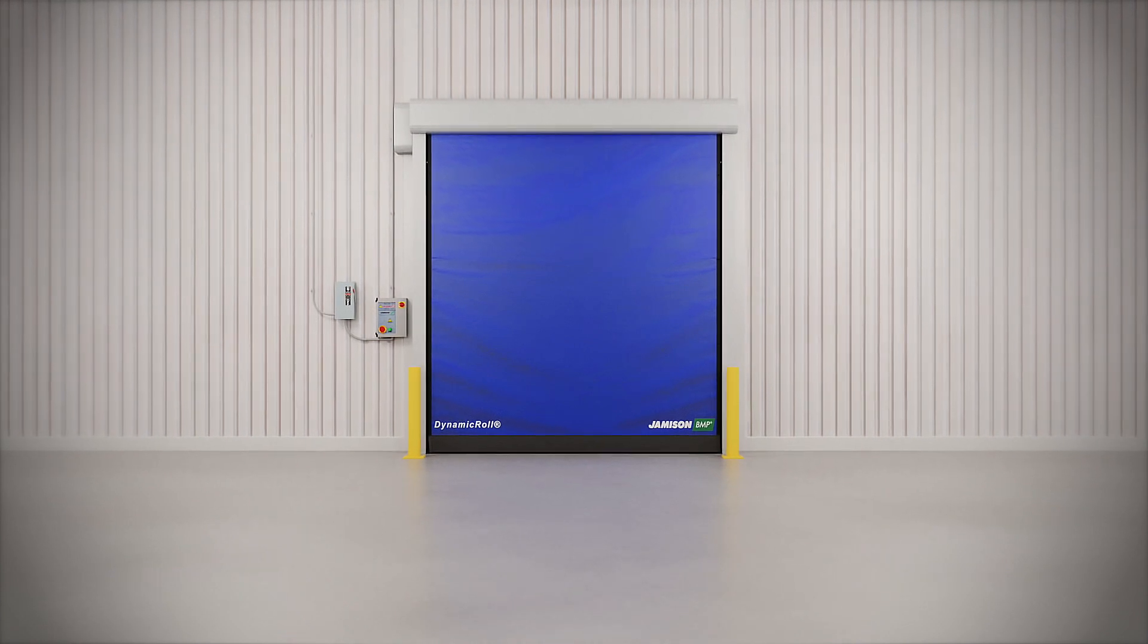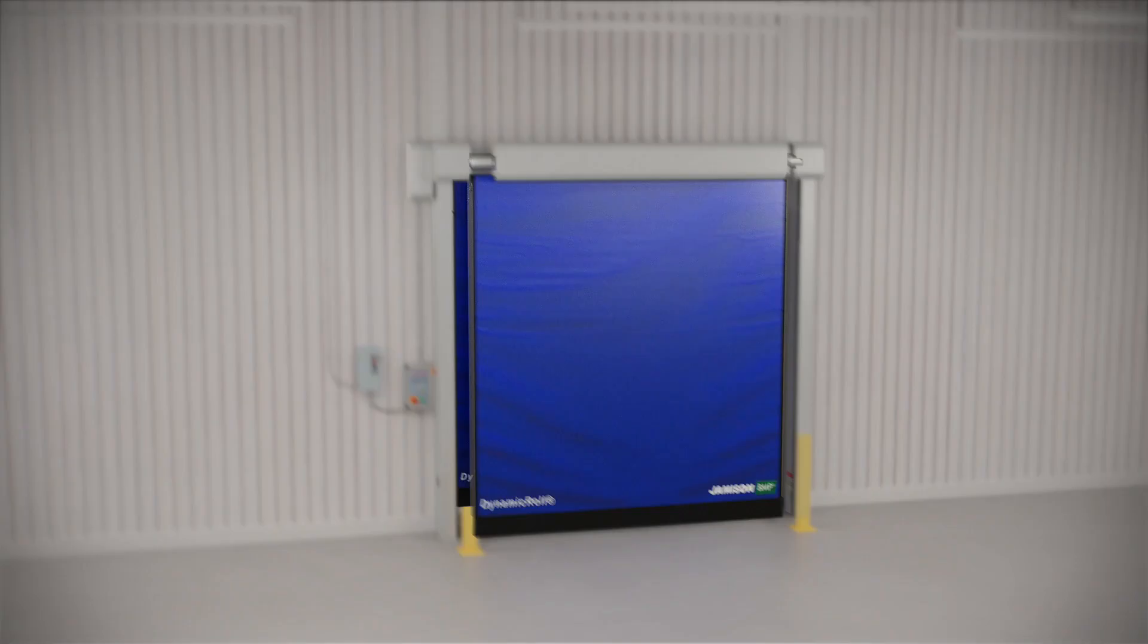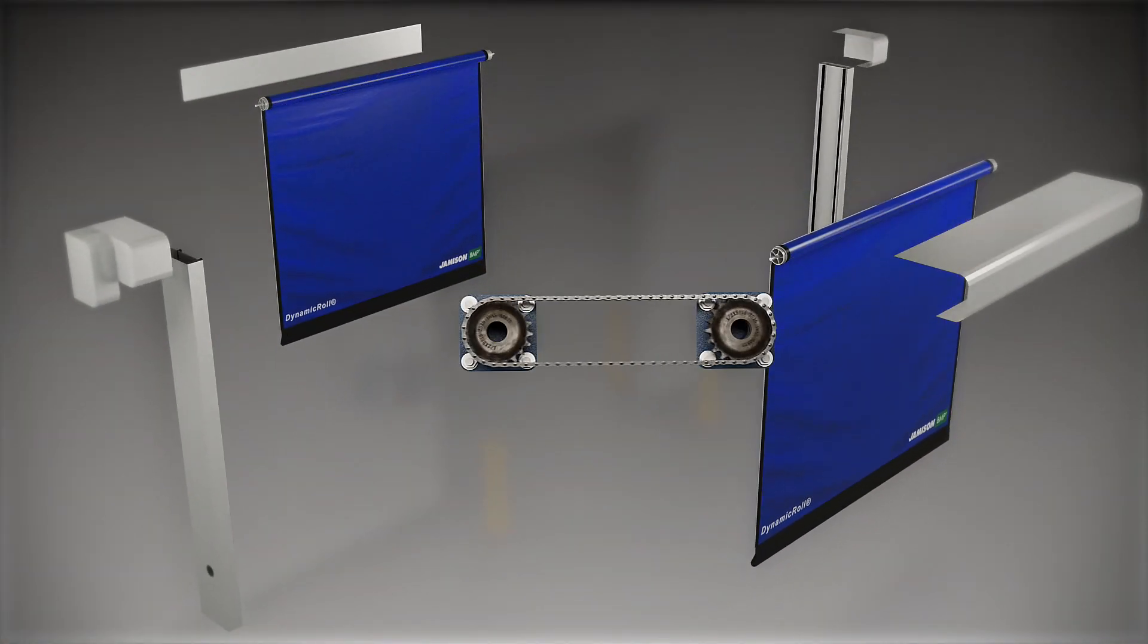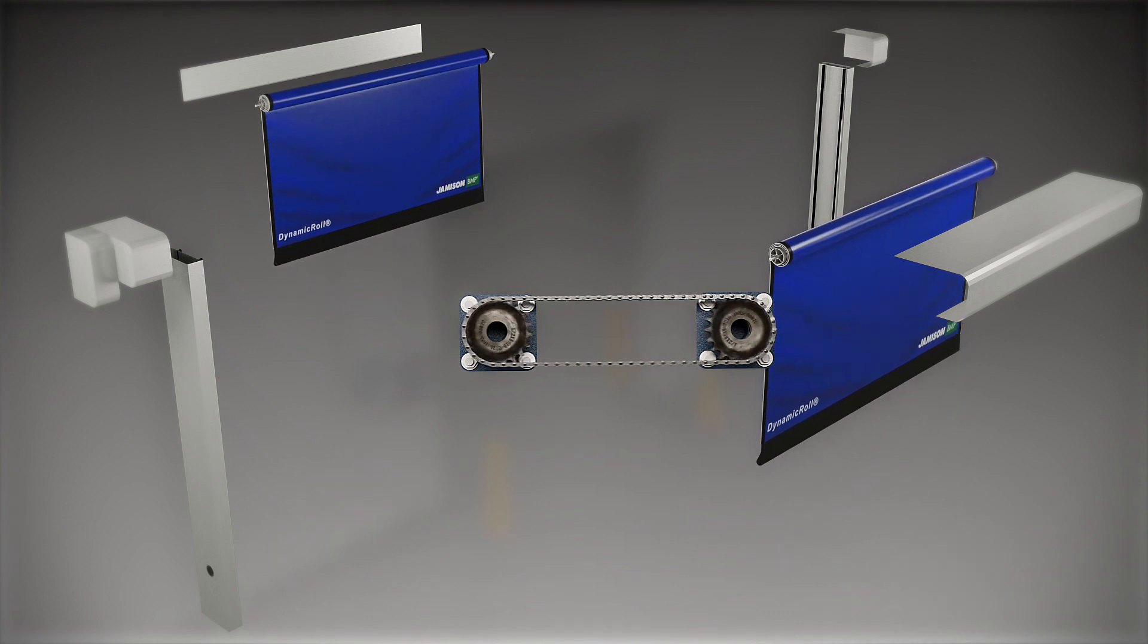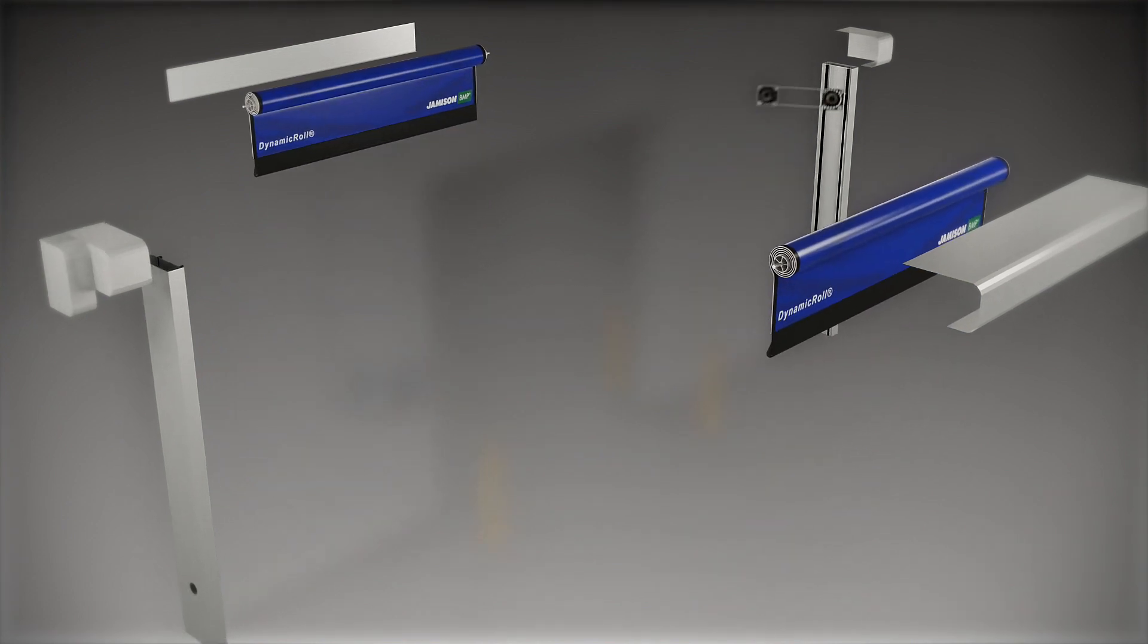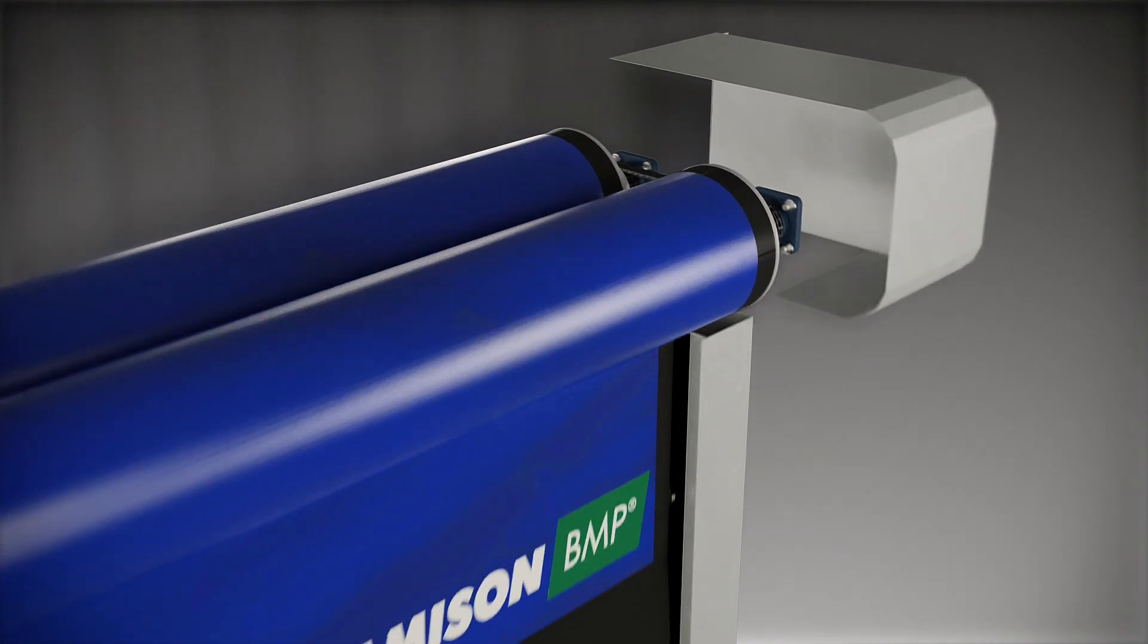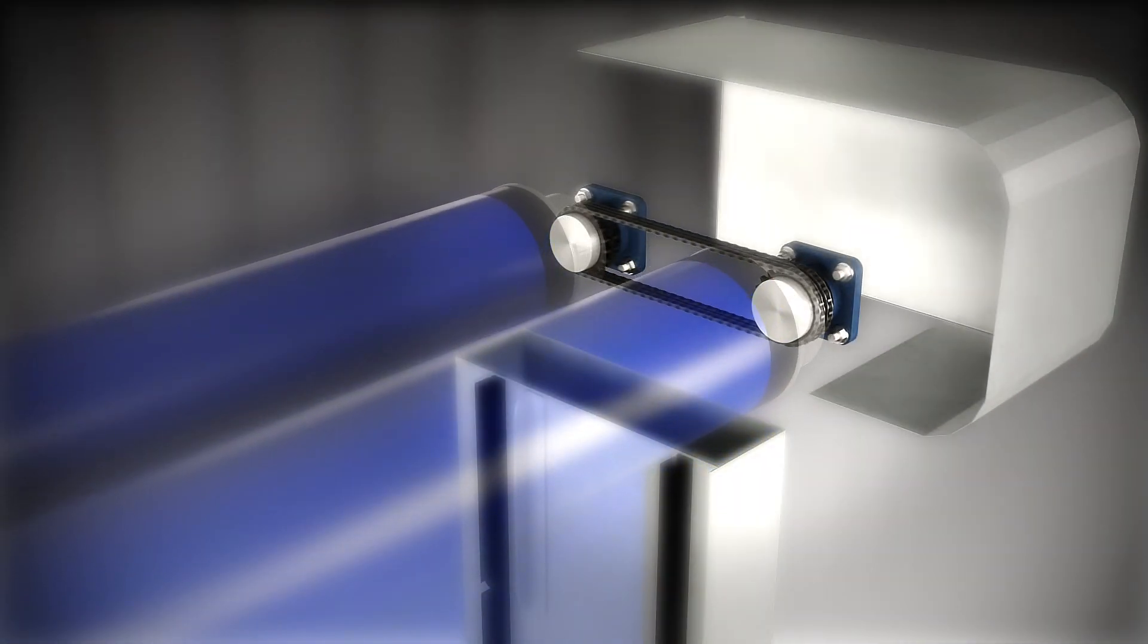The Frigo 2 has the same components as the dynamic roll, but we add in an additional drum, curtain, and two tracks. A drive chain is also added that causes the two curtains to move open and close in sync.